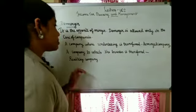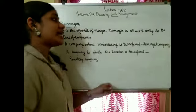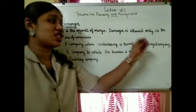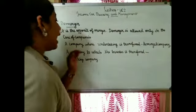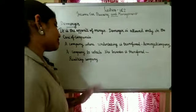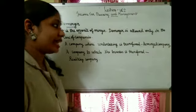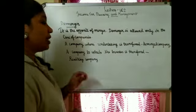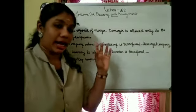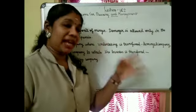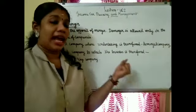The company whose undertaking is transferred is known as the Demerged Company. The company to which the business is transferred is known as the Resulting Company.